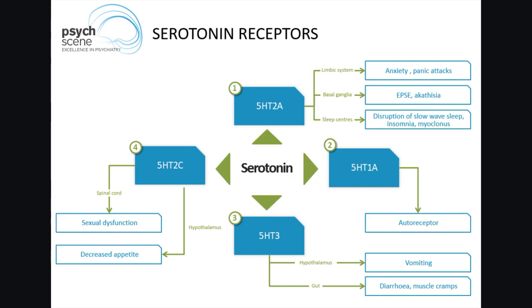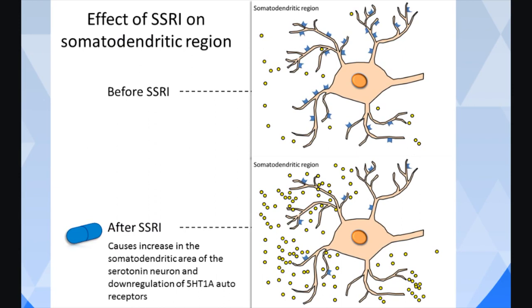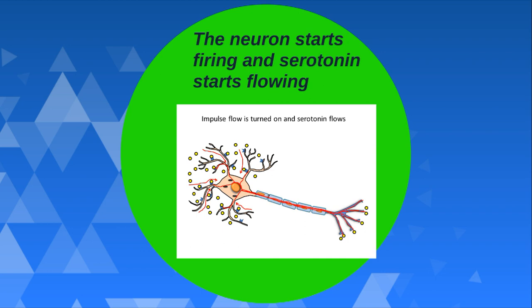Now let's look at how the SSRI actually acts in terms of its efficacy. The SSRI has blocked the reuptake pump, and before an SSRI the somatodendritic area has little serotonin. By blocking the reuptake pump, there's lots of serotonin in and around the somatodendritic area. The receptors situated here are the 5-HT1A receptors. Initially, activating the 5-HT1A receptors — because these are auto-receptors — results in no serotonin release, as we're stepping on the brake. But in about two to four weeks, which is the lag period for onset of action of SSRIs, these receptors will also down-regulate and desensitize, the brake is lifted, serotonin starts flowing, and the neuron starts firing.